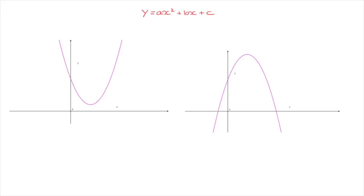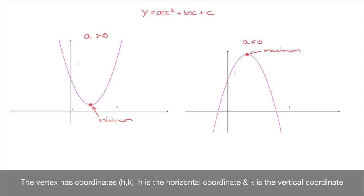Looking at this first parabola, we can see that it's concave up and consequently the sign of the coefficient a is positive. In this case the parabola will have a minimum point. On the other hand, for the second parabola we can see that it's concave down and consequently the sign of the coefficient a will be negative, and the parabola will have a maximum point. So that's what a vertex actually is — it's either a minimum or a maximum point.